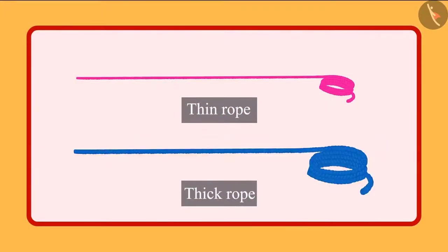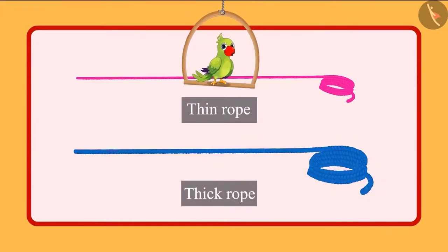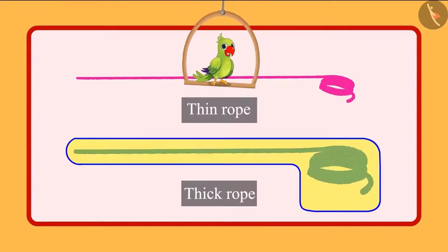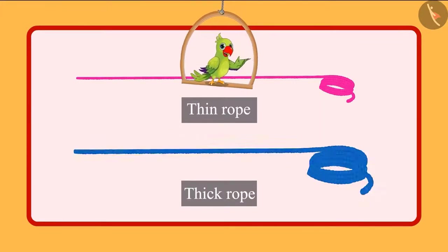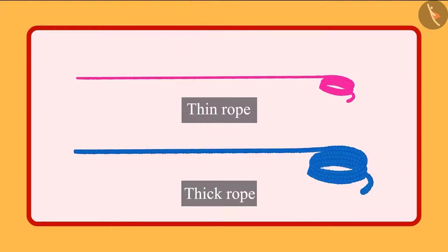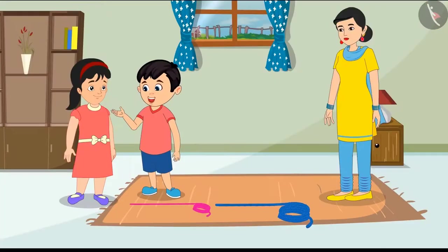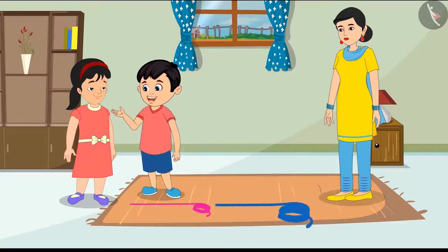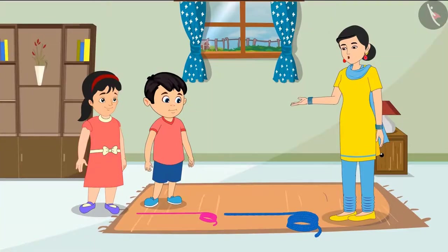Children, you should make a swing with this thick rope. It won't break when you sit. Children, do you think this rope is thicker than the previous rope? Pinky, we will make a swing with this rope because this rope is thicker than this rope. Well done children, you were right.